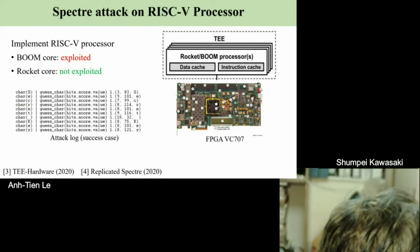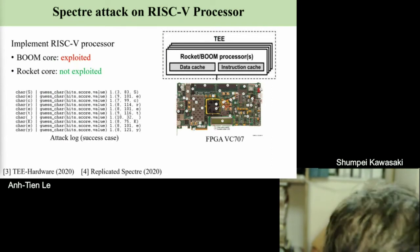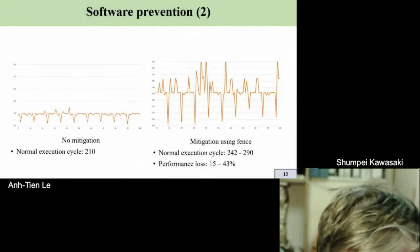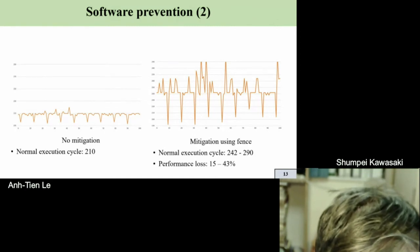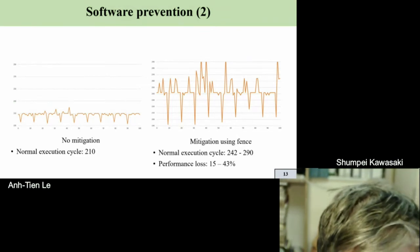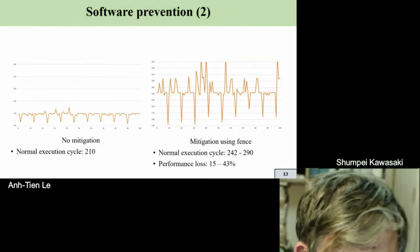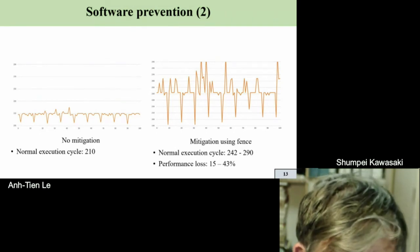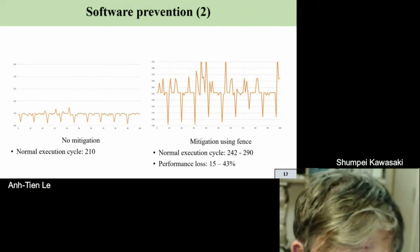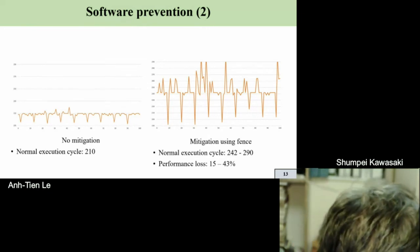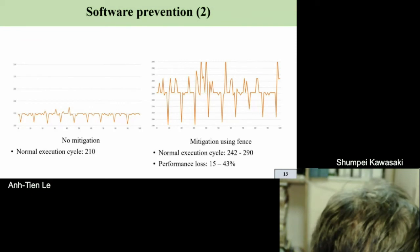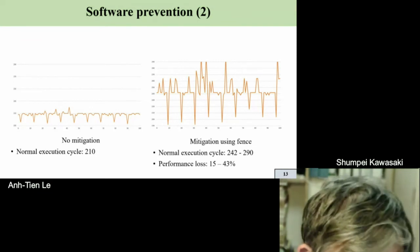On page 13, you mentioned the performance loss of 15 to 43%. Is this acceptable, or is it not acceptable in some cases? Actually, if the user or developer decides they can run the program more slowly, it is acceptable. But for normal use cases, this performance loss is still very high. That's why we have to find another approach — like a hardware approach — to protect against the Spectre attack more efficiently.